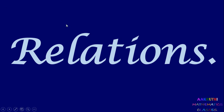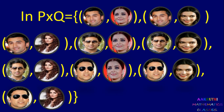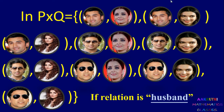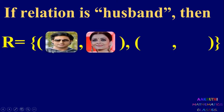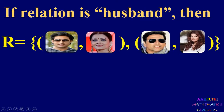Now here we consider relation. What is a relation? From this Cartesian product of nine elements, we consider the relation 'husband'. Abhishek Bachan is husband of Aishwarya Rai, and Akshay Kumar is husband of Winkel Kanna. Only two ordered pairs satisfy this relation. So relation means it is the set of all ordered pairs which satisfy the given relation.